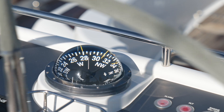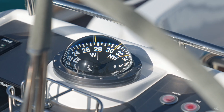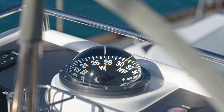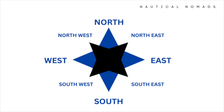Direction is one of the most fundamental concepts in navigation. It's all about knowing where you're going, or where something else is located in relation to your current position. To understand direction, we use the Earth's cardinal points: north, south, east, and west. North points towards the Earth's North Pole, south towards the South Pole, east is the direction the Earth rotates, and west is the opposite.